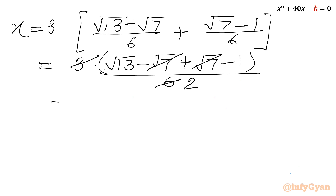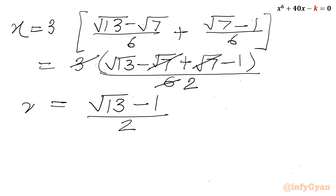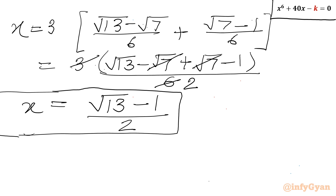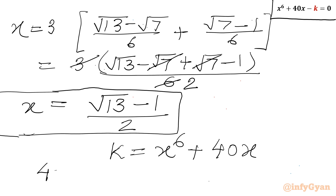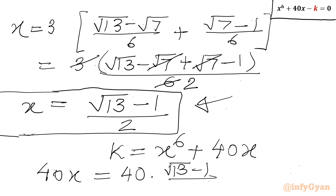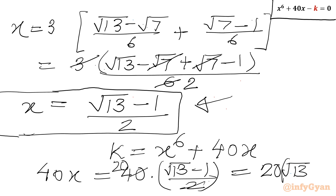The 6 will be cancelled out. It will be 2 now. I will write here the value of x: root 13 minus 1 over 2. Now this is the value of x and our target is to evaluate k. So the value of k is x to the power 6 plus 40x. And if I calculate 40x here, it will be 40 times x, which is root 13 minus 1 over 2. So I can cancel 20 — it will be 20 times root 13 minus 1. Now I need to only calculate x to the power 6.